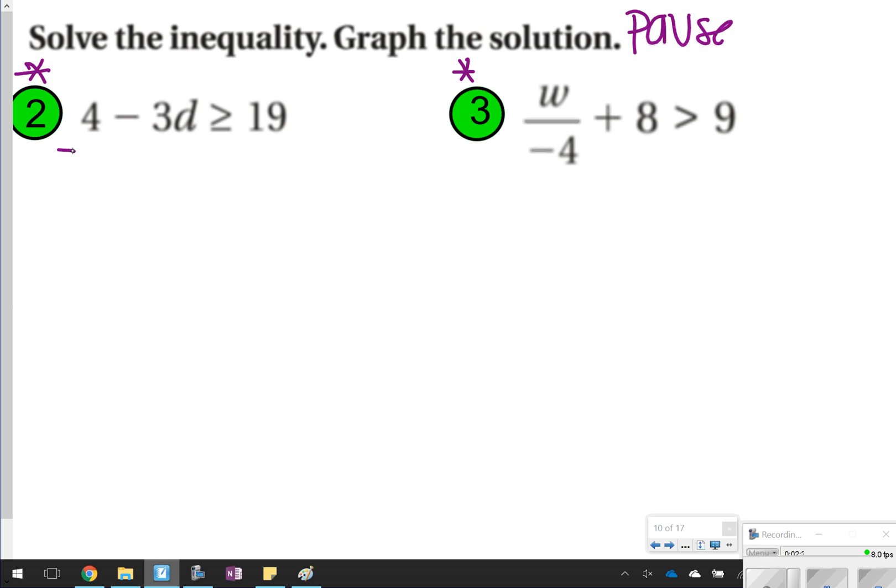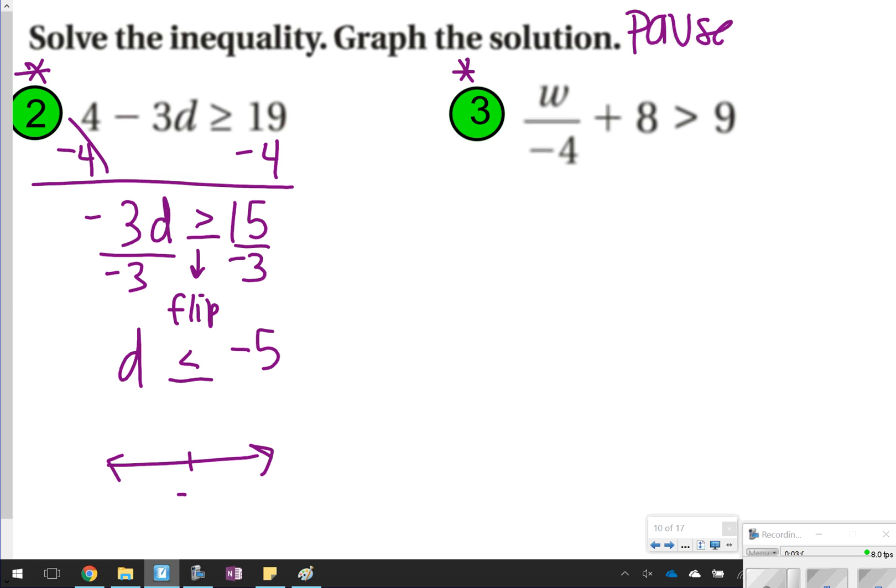First thing we're going to do is subtract 4 from both sides. Hopefully you didn't focus on that 3 yet. So we'll have negative 3d is greater than or equal to 15. I'm going to divide both sides by negative 3. Because I'm dividing both sides by negative 3, a negative number, I'm going to flip my sign to make it less than or equal to. So I'm going to have d is less than or equal to negative 5. My graph will be a closed circle pointing to the left.